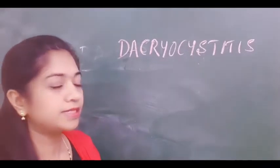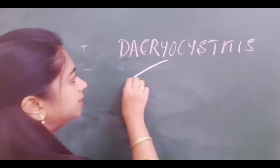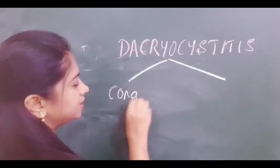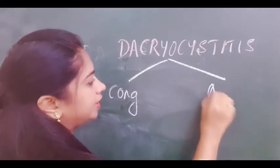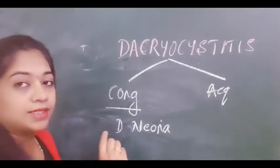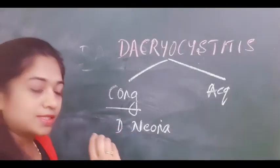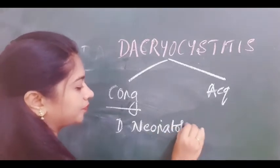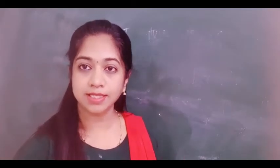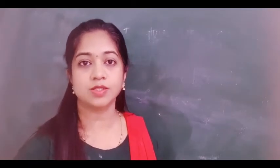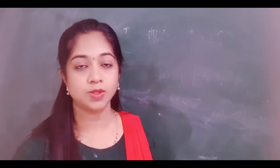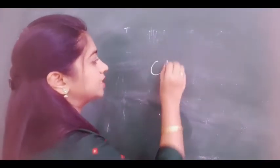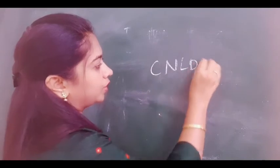Dacryocystitis can be classified into congenital and acquired. The congenital dacryocystitis is also known as dacryocystitis neonatorum. It is also commonly known as congenital nasolacrimal duct obstruction, or CNLDO. In this video, I am discussing mainly on the congenital dacryocystitis.